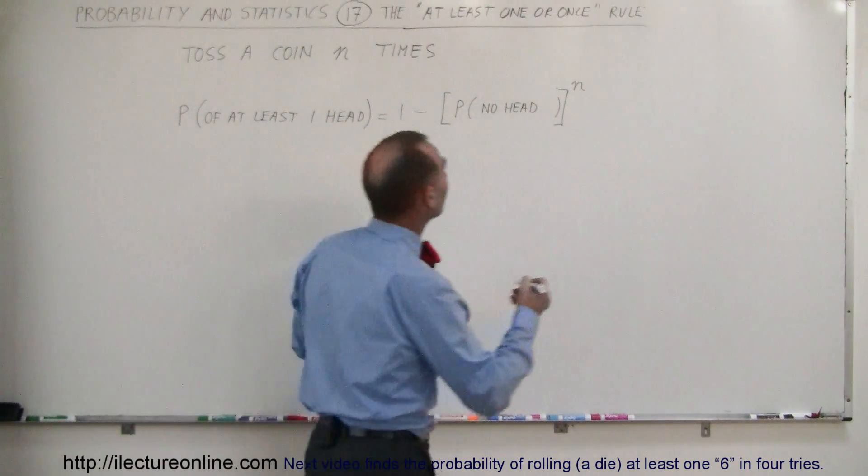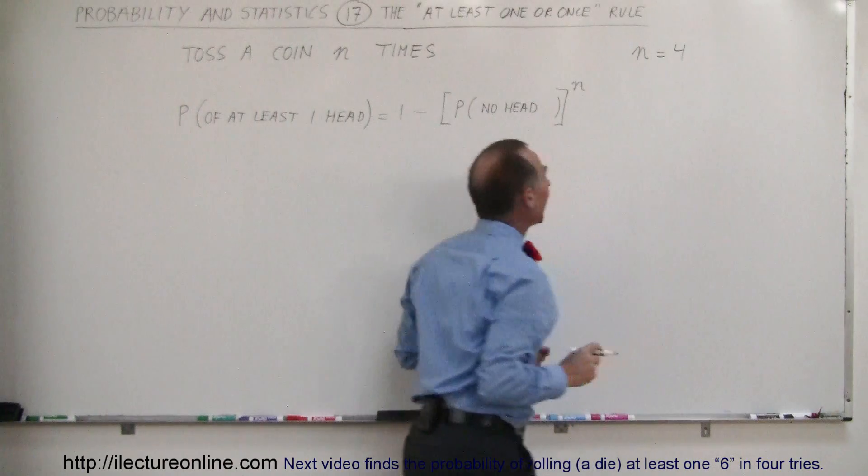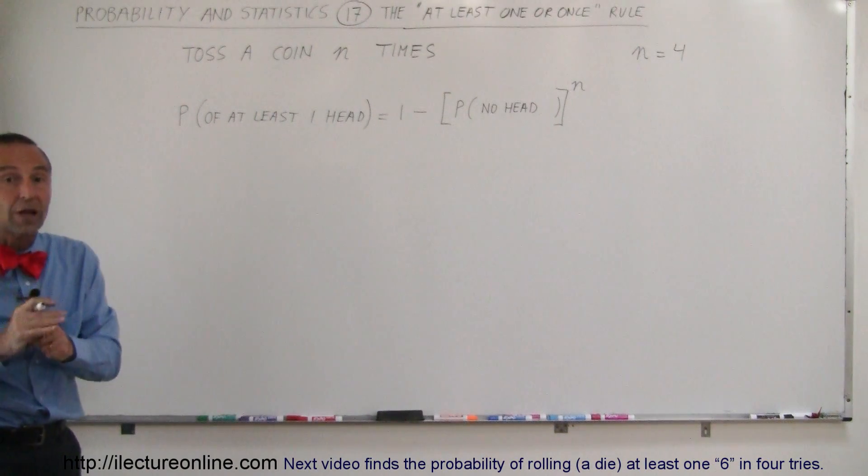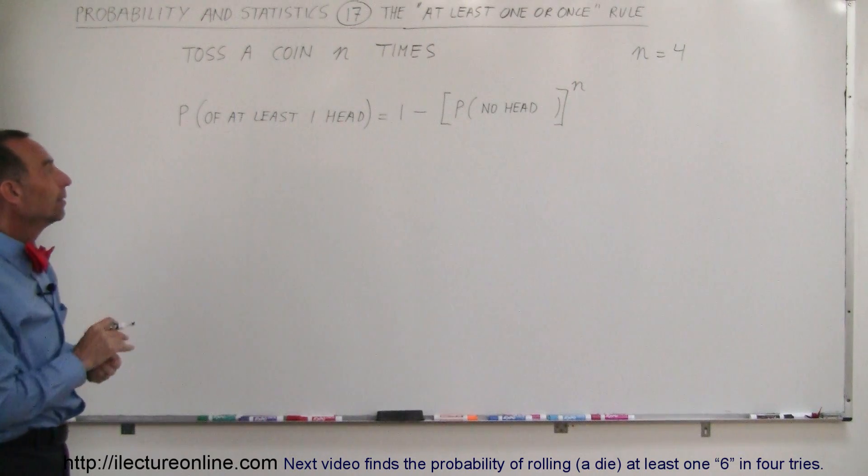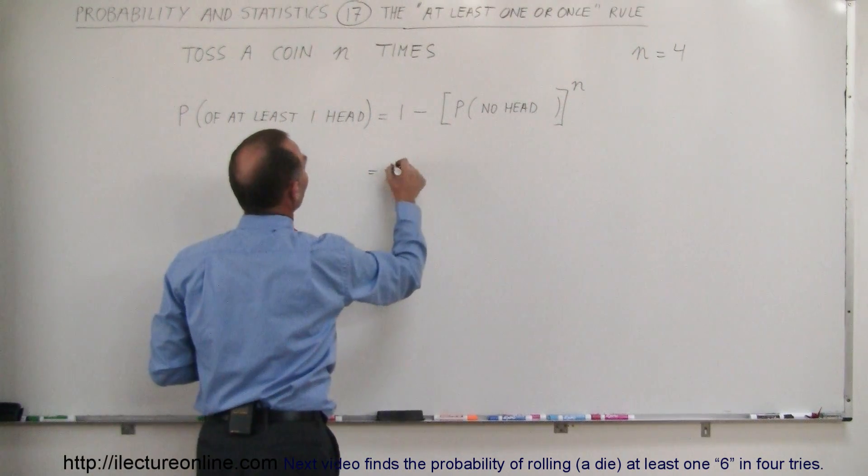Let's say that we're going to toss the coin four times and we want at least one of those four tosses to be a head. So the probability is going to be equal to one minus, what is the probability that you will not get a head on any one toss?